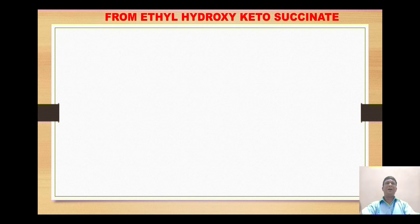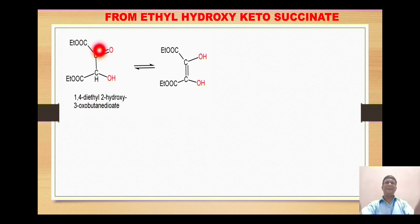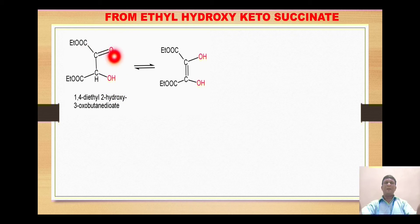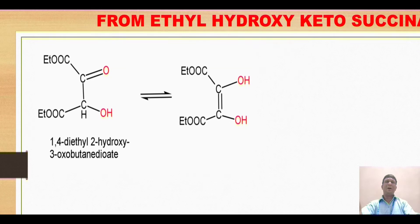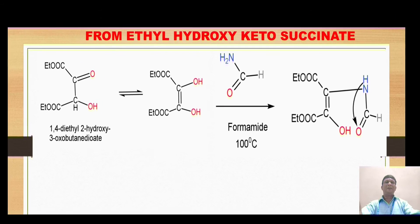The next synthesis starts from ethyl hydroxy keto succinate, a succinic acid derivative — specifically the diethyl ester of succinic acid with a hydroxy group and a doubly bonded oxygen on one carbon, which is why it is called keto and hydroxy diethyl succinate. The hydrogen alpha to the carbonyl group may migrate onto the oxygen. The oxo group is thereby converted to a hydroxy group, and a double bond is generated between the two carbons, giving an intermediate.